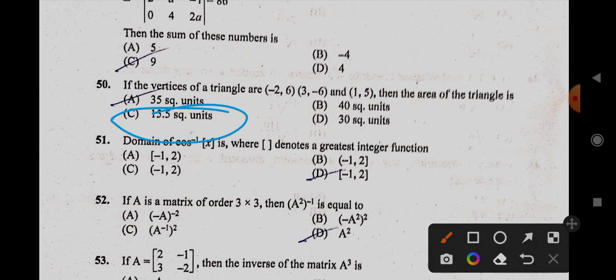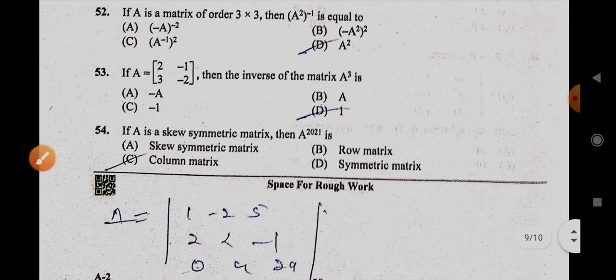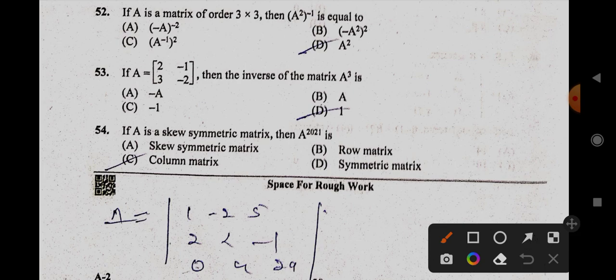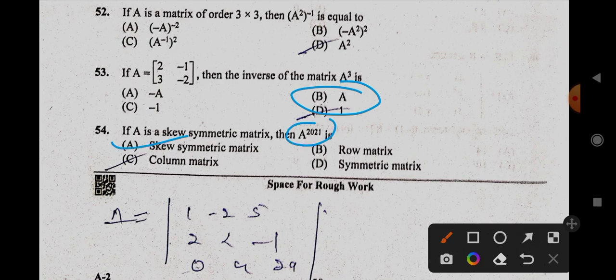51, A option, it is minus 1.2. 52, it is option number C. 53, it is B. 54, it is A, skew symmetric. But remember, whenever it is even power, you get a symmetric. But it is odd power, so it is skew symmetric.